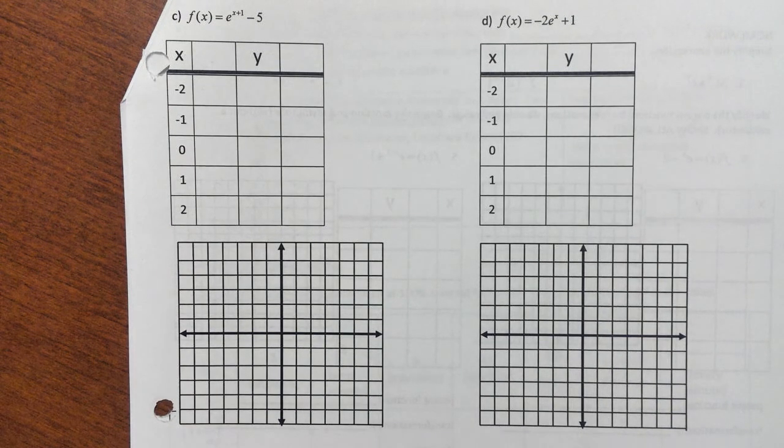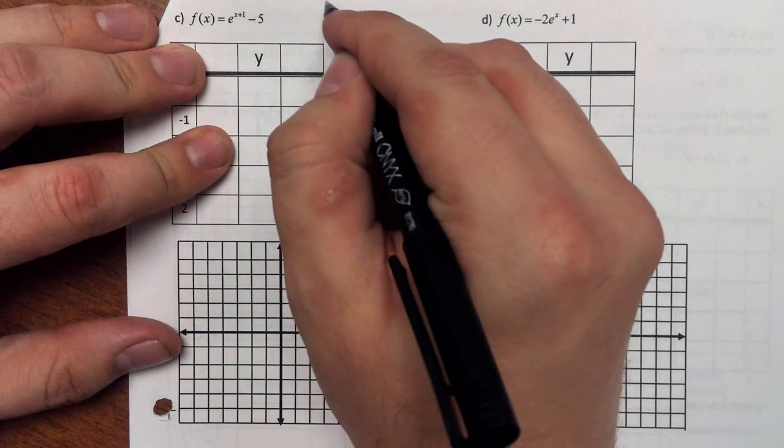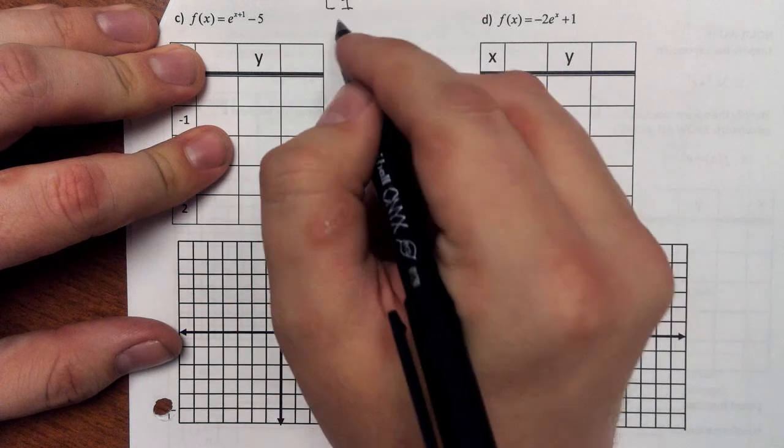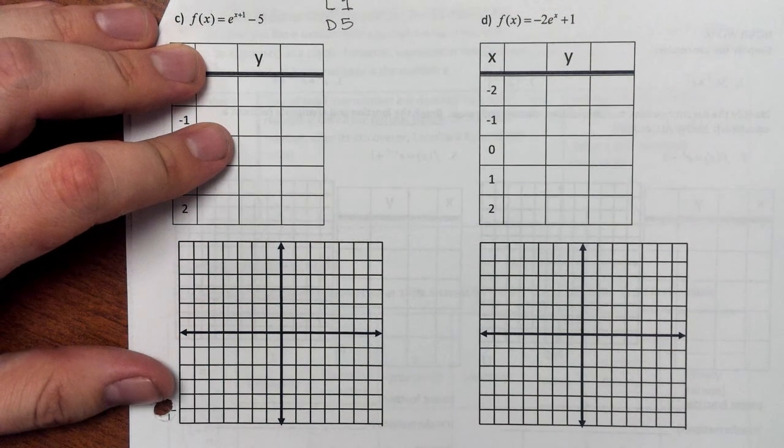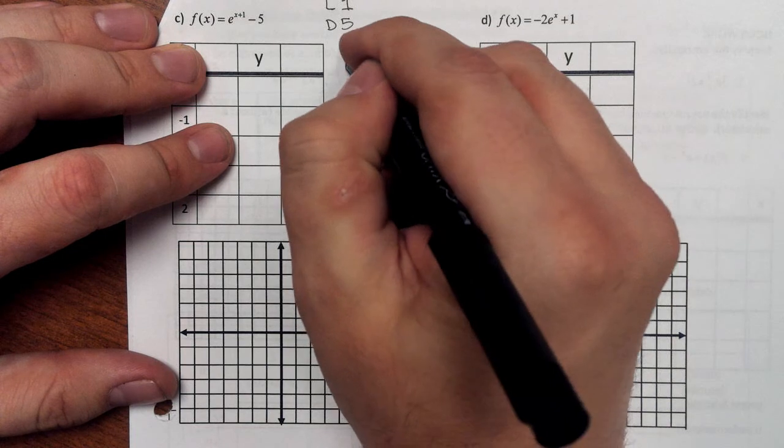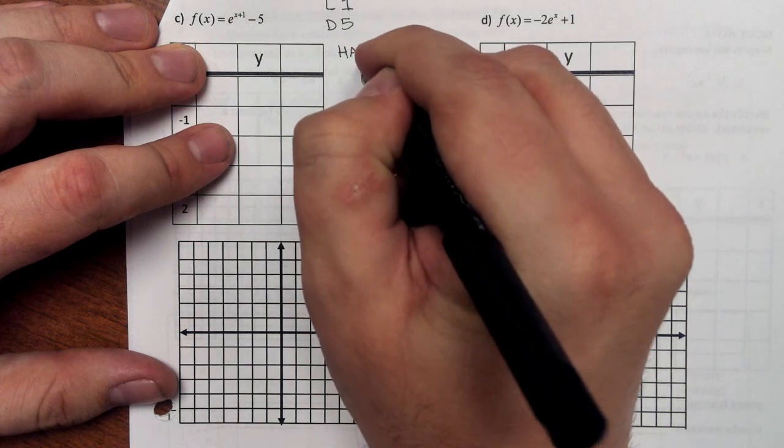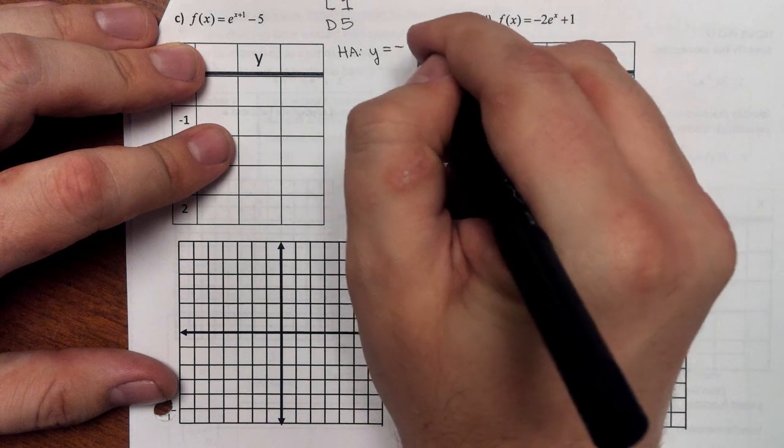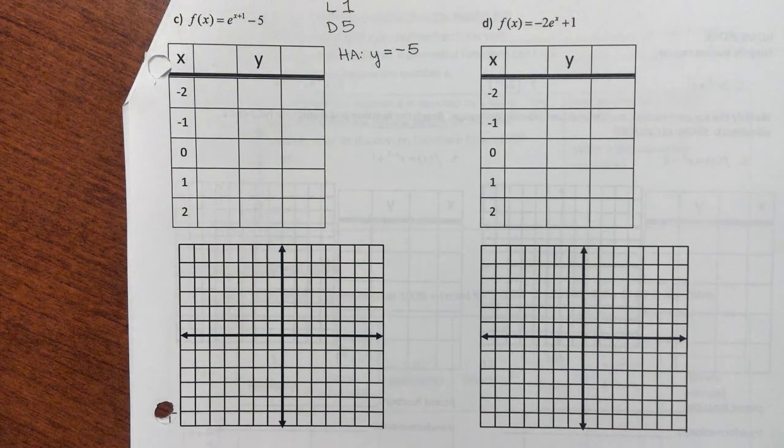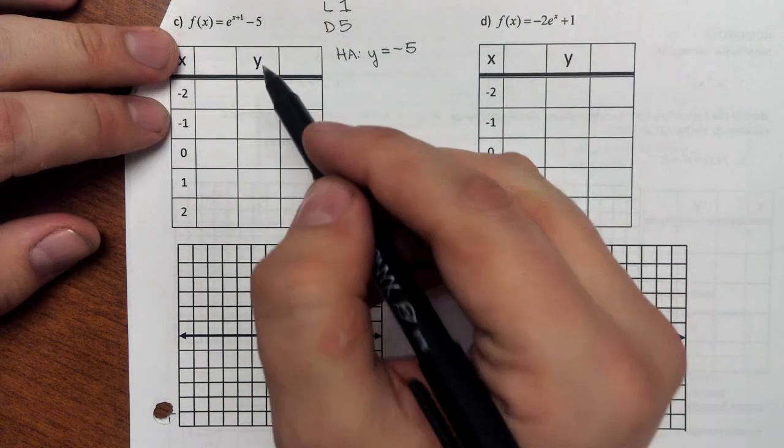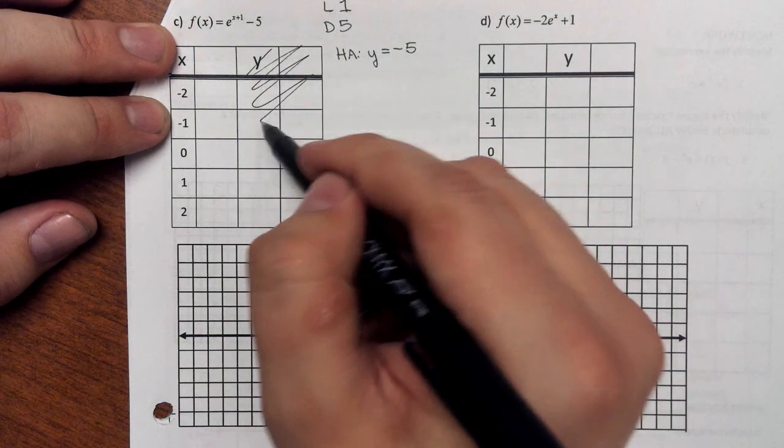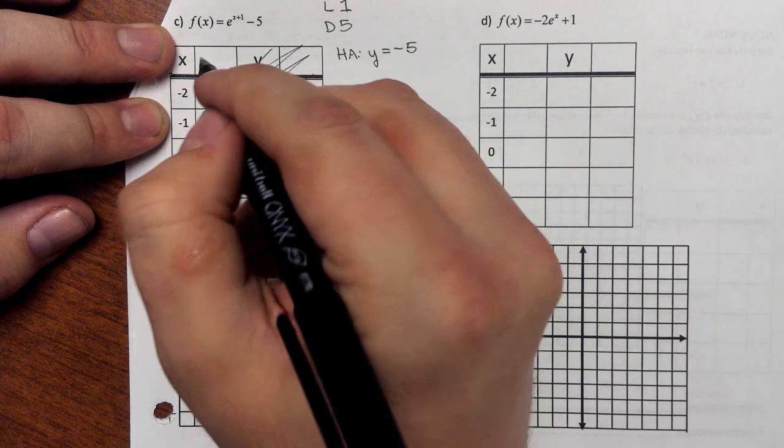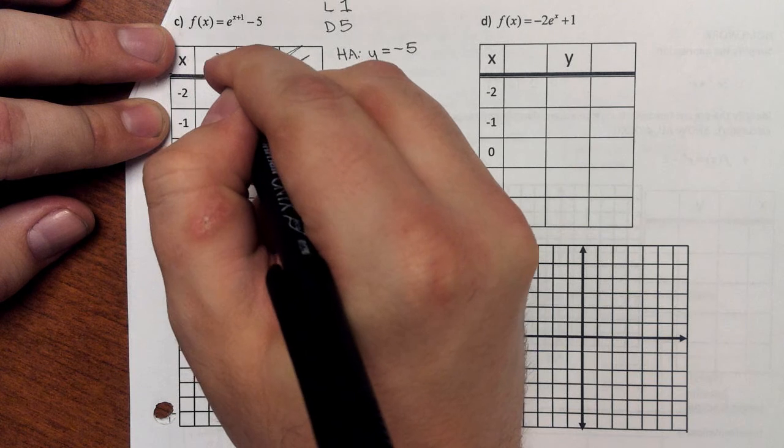Now, I know how transformations work. x plus 1 means I should go 1 to the left, and minus 5 means I go down 5. But more than that, I have to remember that if I'm going down 5, that's also going to change my horizontal asymptote. It will no longer be the x-axis, it will be the line y equals negative 5. So, if you want to graph this, again, I don't really need this column right here.